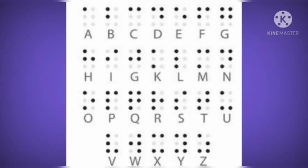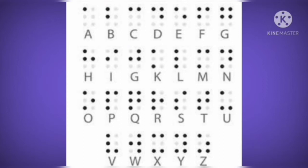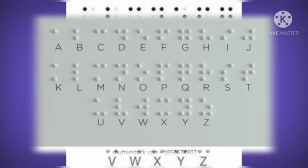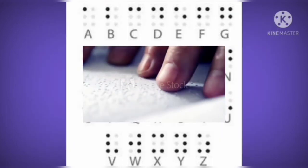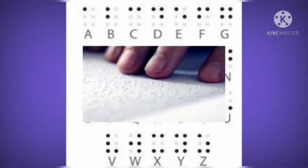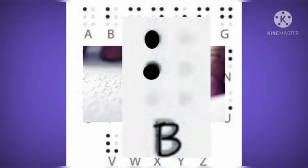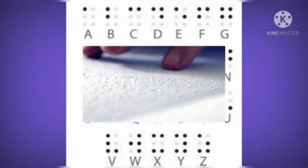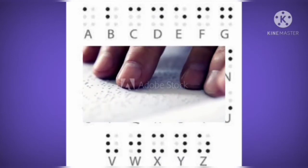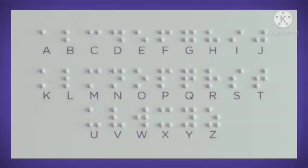Now let us see how letter B looks in Braille script. Letter B also has six raised dots, three dots in each row. For B, the first and second dot in the first row would be thicker. So when a person touches and feels it, he can recognize the letter B. Children, if you are interested, you can learn Braille script in our library and learn the alphabets A to Z.